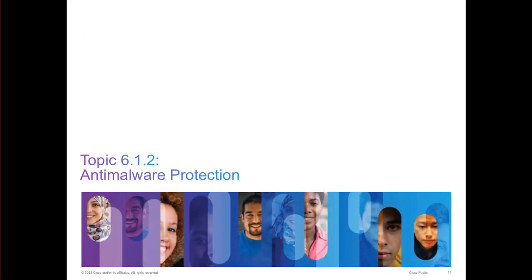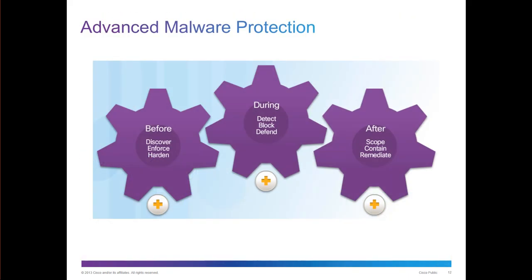Advanced malware protection uses layers. Before malware occurs: discover, enforce, and harden our systems. During malware infection, we're looking at detecting, blocking, and defending against the malware. Post-infection covers the scope, containing malware, and hopefully remediating.